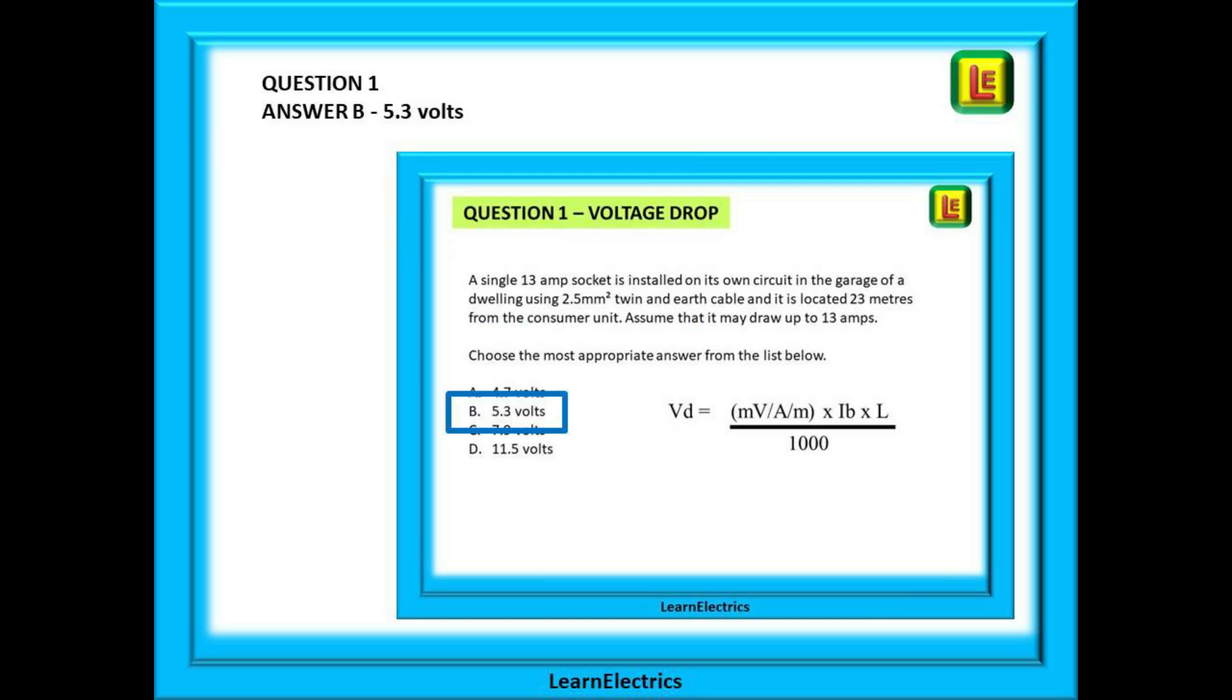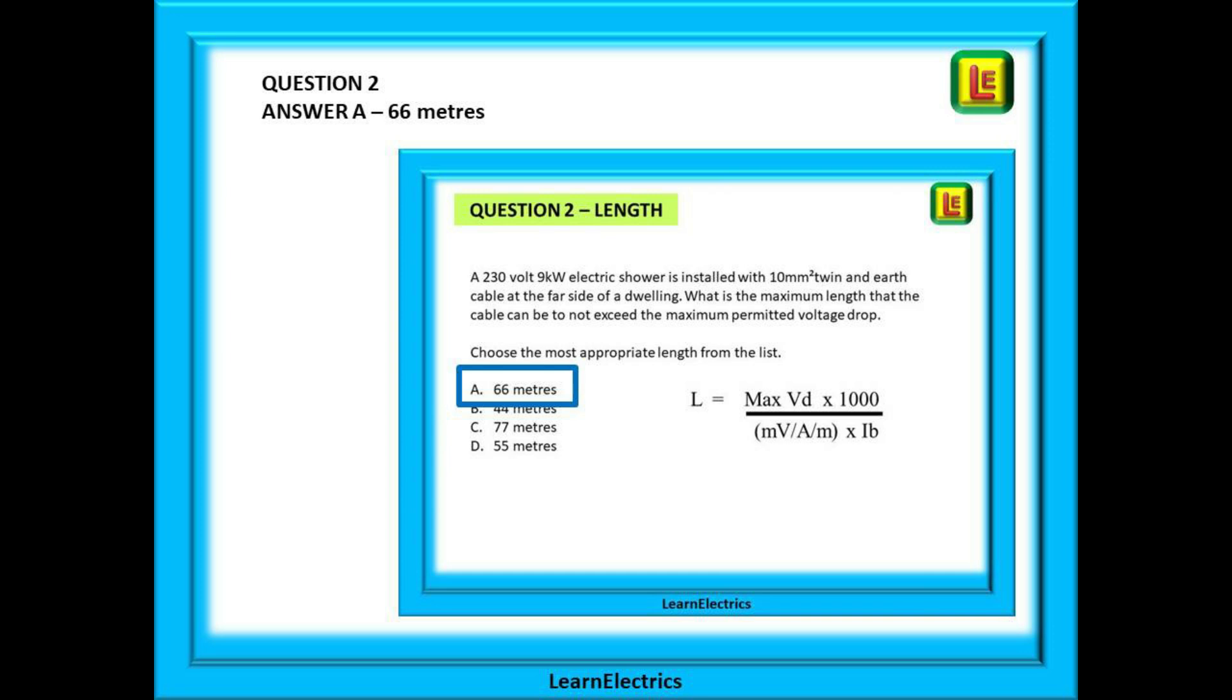Question one, the closest most appropriate answer was answer B, 5.3 volts, give or take a very small amount. And question two, the closest answer was 66 meters. You will find that all the number choices for calculation questions are far enough apart that it is easy to find the correct choice. This is to allow for small differences in rounding up or rounding down in different calculators.